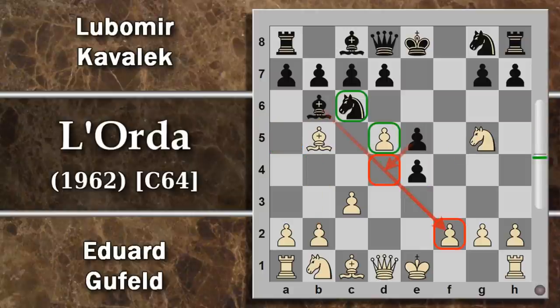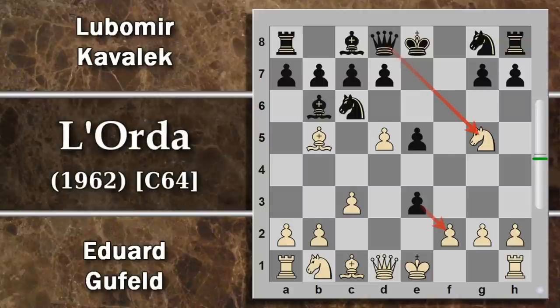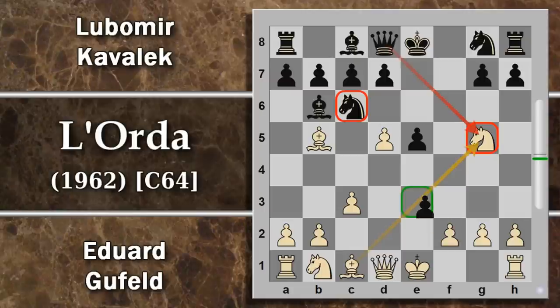In partita Cavalek non salva il cavallo: si comincia a vedere qualche sacrificio interessante. Sfruttando l'apertura della diagonale dell'alfiere a campo scuro, Cavalek gioca la spinta e3. Questa difende il cavallo interferendo con la linea difensiva dell'alfiere c1, quindi il nero potrà catturare il cavallo in seguito. Si minaccia anche la presa di f2 con scacco.